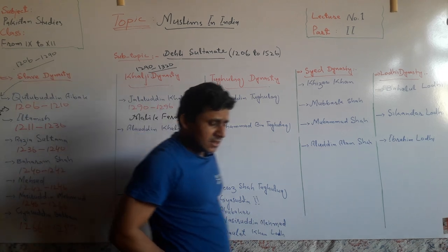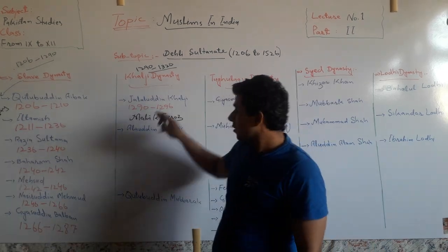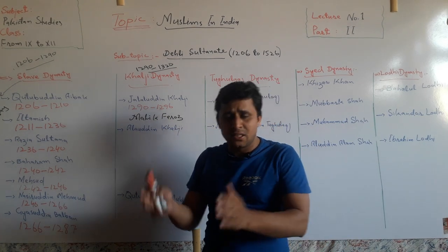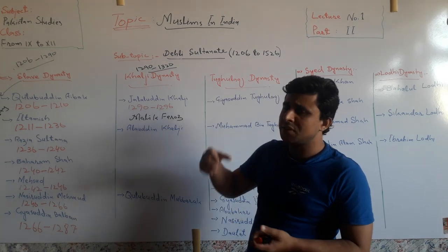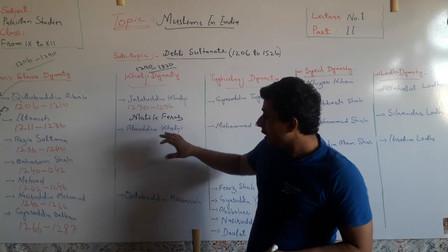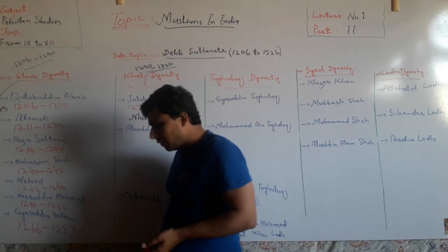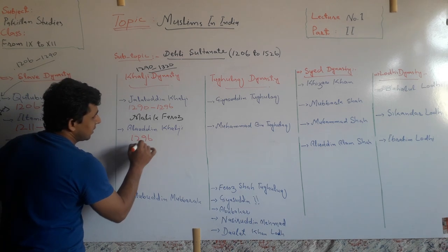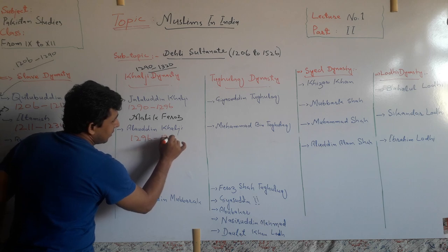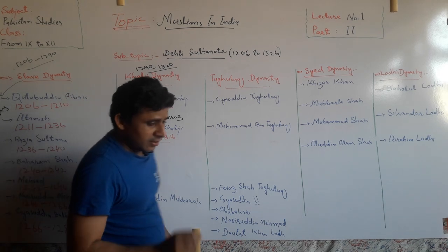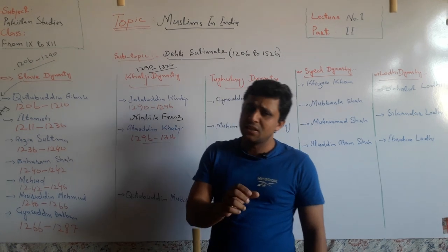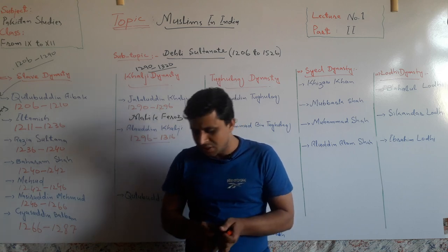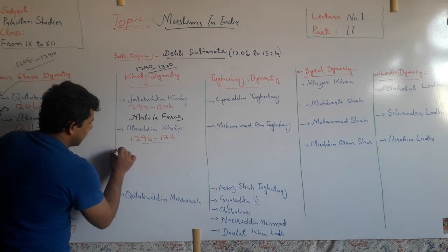Some writers say that Jalaluddin Khilji was killed by Alauddin Khilji, who was his son-in-law. Alauddin Khilji became the ruler of the Khilji dynasty from 1296 to 1316. He was the most famous ruler of the Delhi Sultanate because he introduced several important reforms.